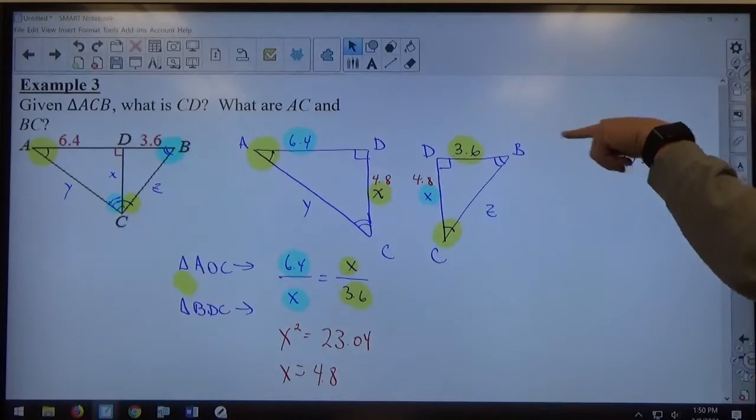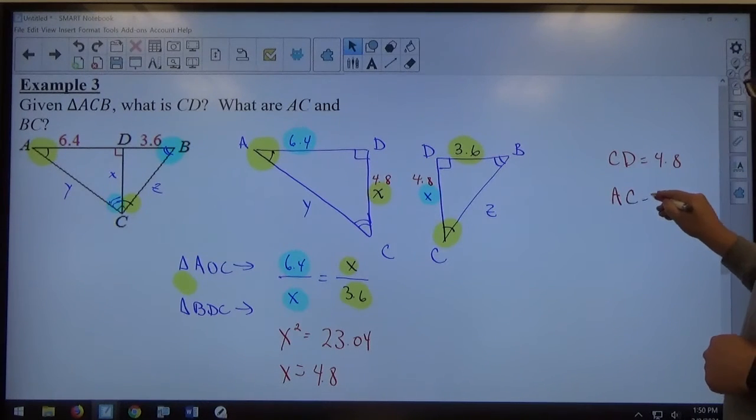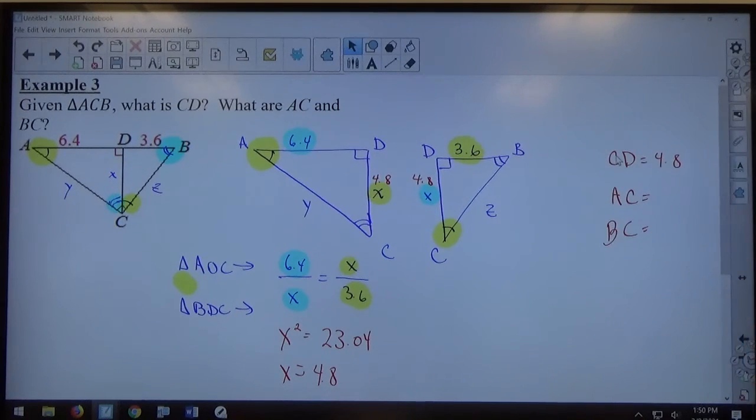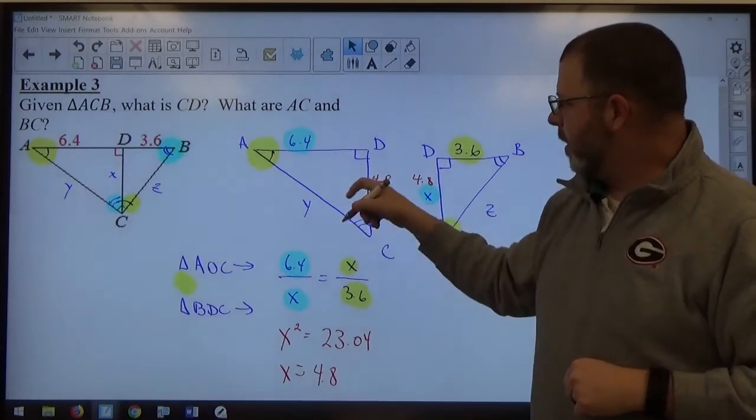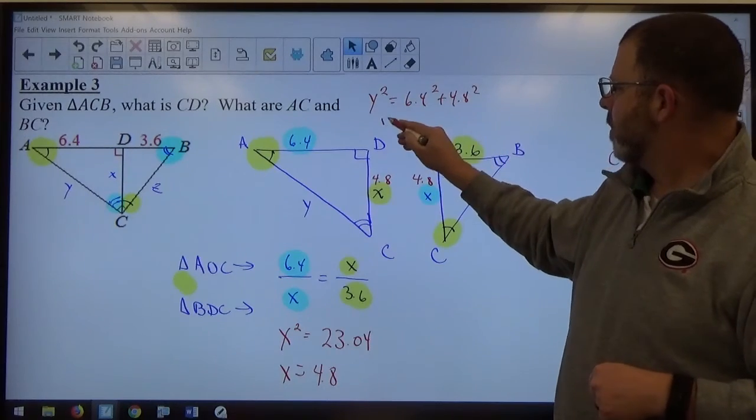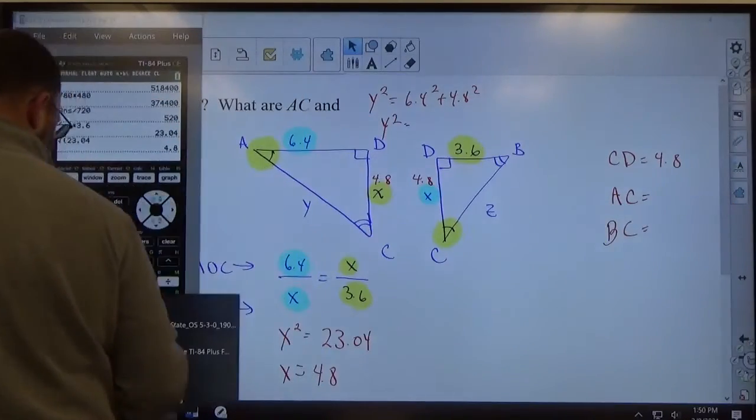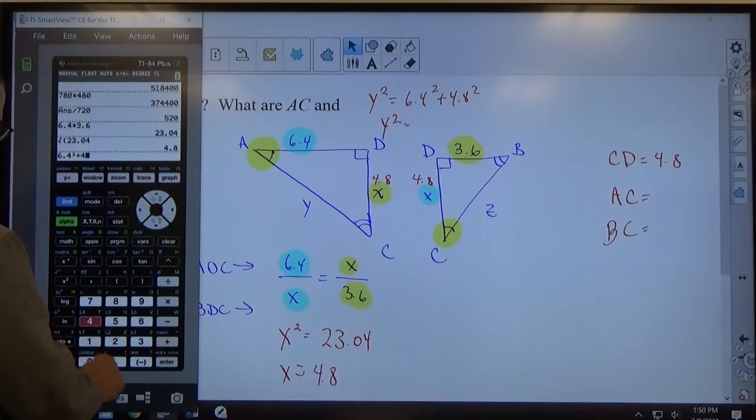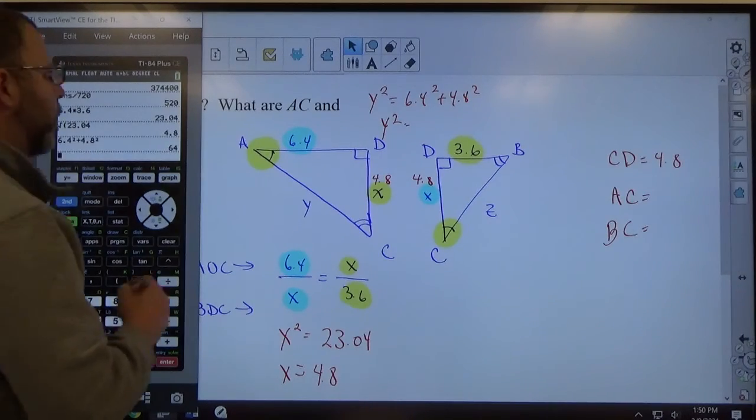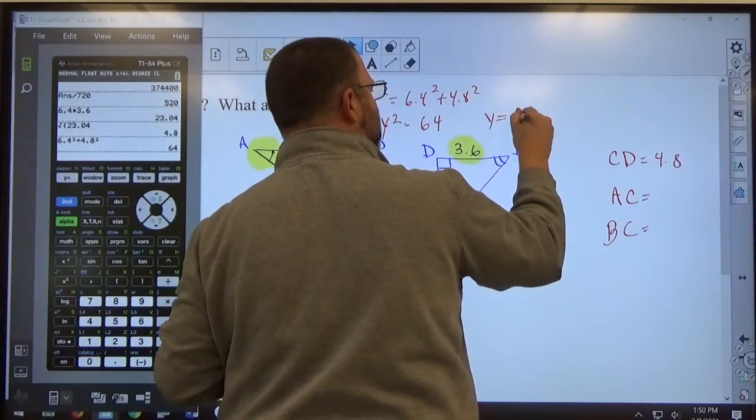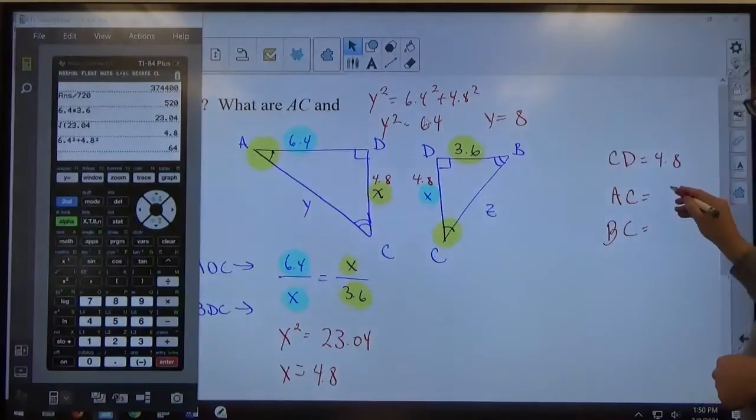Question B and C, what are AC and BC equal to? Once I know that DC is 4.8 in the left triangle over here, Pythagorean Theorem says that Y squared should equal 6.4 squared plus 4.8 squared. Calculator can evaluate that for us. So, 6.4 squared plus 4.8 squared equals 64. So, Y squared equals 64, which means Y equals 8. And Y is the measure of AC, so AC equals 8.